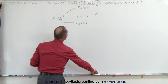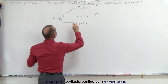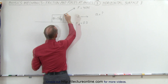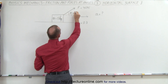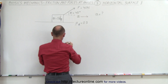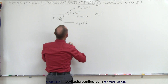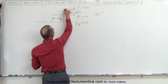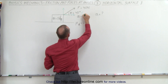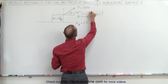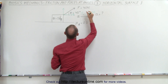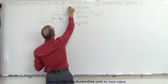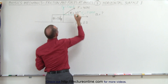Let's first find the components of the force. If we assume the angle theta is 45 degrees, then we're going to have a horizontal component and a vertical component of that force. So we have F in the x-direction equal to F times the cosine of theta, and F in the y-direction equal to F times the sine of theta.